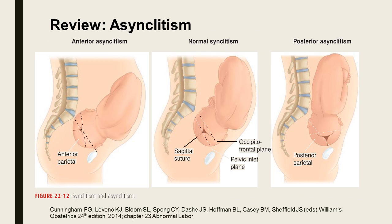Let us review the concept of asynclitism. Normal synclitism is when the fetal sagittal suture is midway between the symphysis pubis and the sacral promontory. Anterior asynclitism is when the sagittal suture points more towards the sacral promontory, so the anterior parietal bone is presenting at the birth canal. Posterior asynclitism happens when the sagittal suture points more towards the symphysis pubis, and the posterior parietal bone is presenting. Asynclitism can lead to abnormal labor.